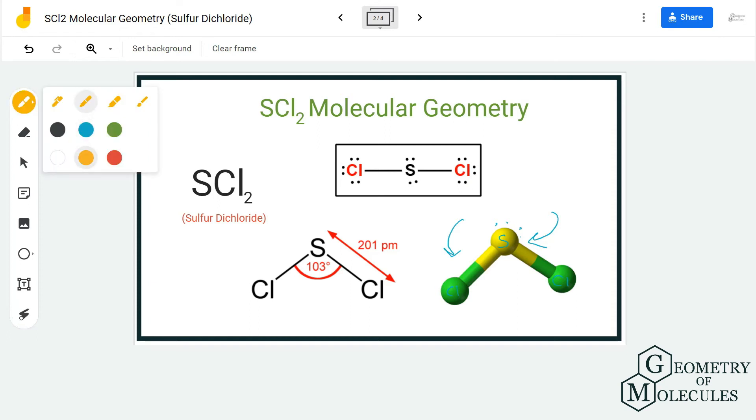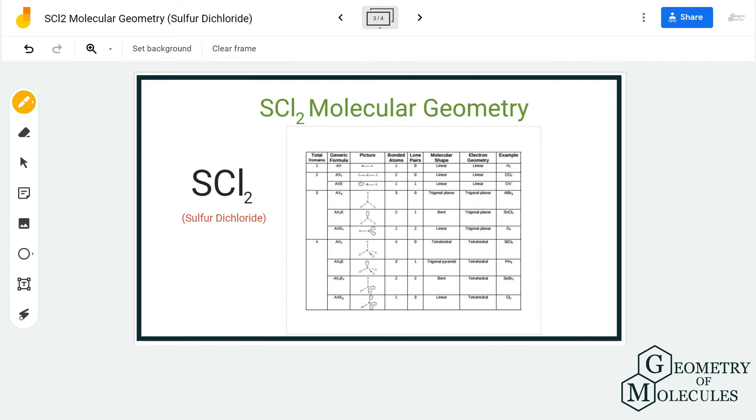If you look at the chart given here using AXE notation, you can see that it has a notation of AX2E2, where A is the central atom, X is the number of atoms bonding to it, and E is the number of lone pairs on it.